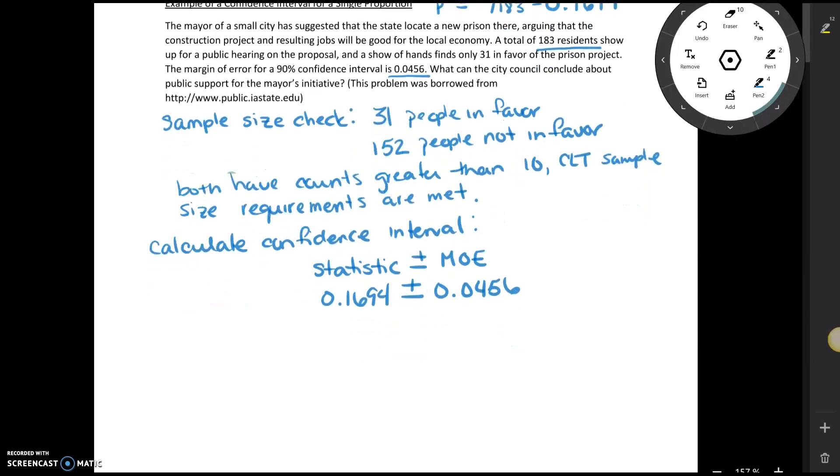The lower bound for the interval is going to be 0.1694 minus 0.0456. Take a moment, put that in your calculator, and we get that the lower bound here is 0.1238.